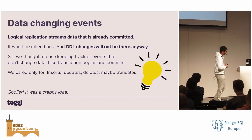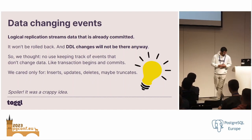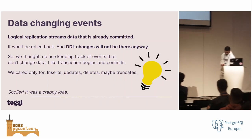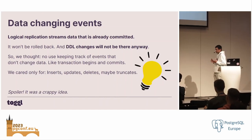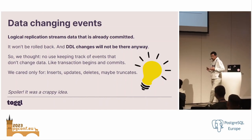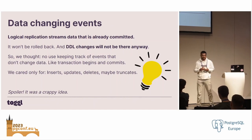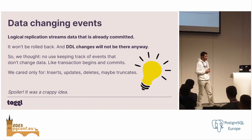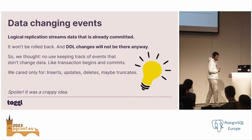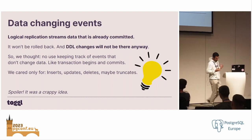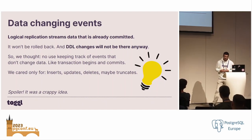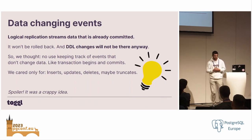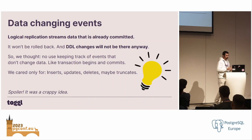This made sense at the time, because we knew that for a given data-changing event to make it into the Postgres logical replication stream, that change had to already be committed. So we didn't see any use in keeping track of any other events like transaction starts and transaction ends. Looking back, of course, that was a very bad idea.